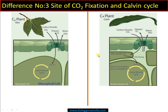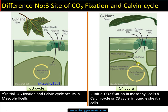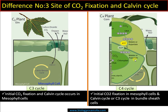Difference number three — site of carbon dioxide fixation. In C3 cycle, initial carbon dioxide fixation and Calvin cycle both occur inside the mesophyll cells. Carbon dioxide enters, oxygen moves out, and water is also released by transpiration. In C4 cycle, initial carbon dioxide fixation takes place in the mesophyll cells, but it is later transported into the bundle sheath cell where Calvin cycle occurs. So initial CO2 fixation and Calvin cycle are separated in space at two locations.